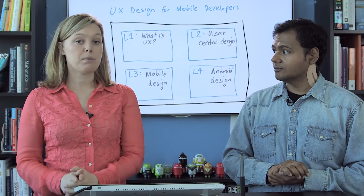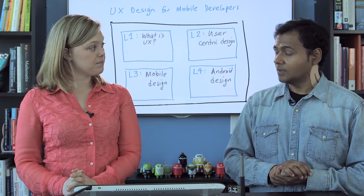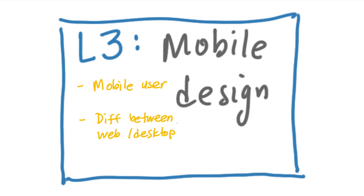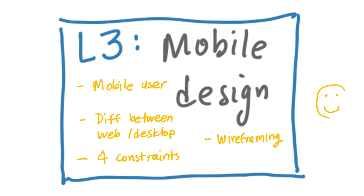So Nazmal, let's talk about what you're going to learn in lesson three. In this lesson, you'll learn how to design for the mobile user and how this is different from designing for a web or desktop user. You'll also learn about four mobile constraints that you need to keep in mind for any mobile apps that you build. Then you'll learn more about wireframing, picking up from where we left off in lesson one — going deeper into how to design a flow of screens to support each step inside your application.